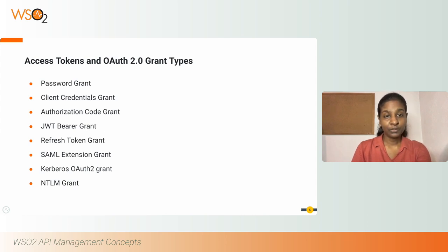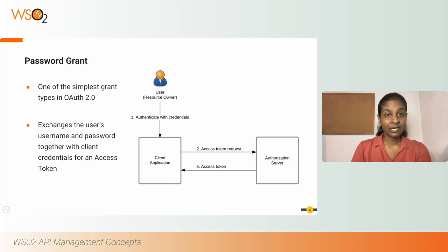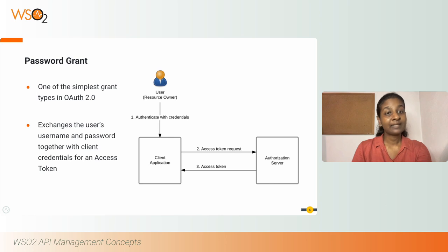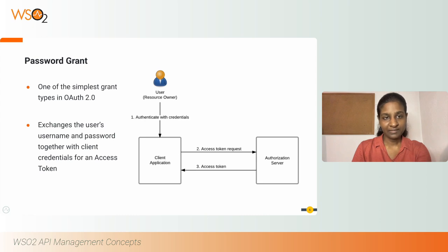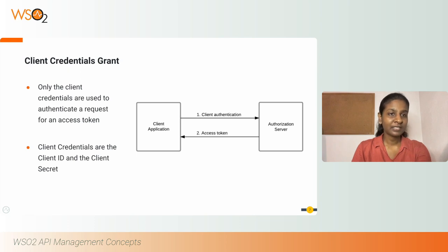In the next slides, I'll give you a brief idea about two of these grant types so that you can get an understanding about them. Password grant is one of the simplest grant types in OAuth2. This is where you can obtain an access token by exchanging the user's credentials — that is the username and the password — together with the client credentials of the application. Once you register an application, you will receive a client ID and a client secret, referred to as the client credentials. Then, in the client credentials grant type, only the client credentials are used to authenticate a request for an access token, as you can see in this diagram.